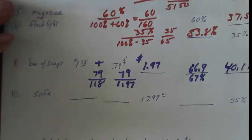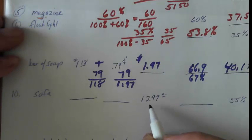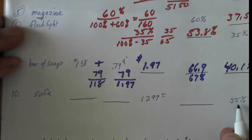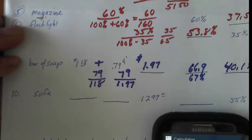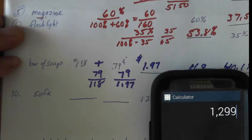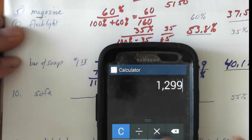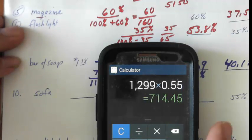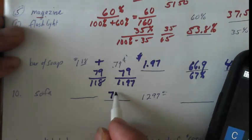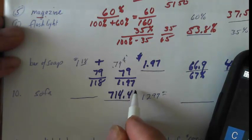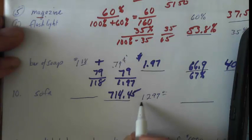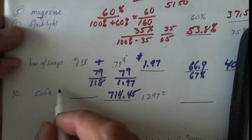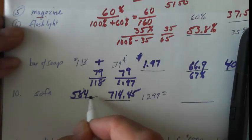Problem 10 is a sofa. They give us the selling price and the markup based on selling price, and we have to find the other values. To get the markup amount, we convert the percentage to a decimal: 1299 times 55% gives a markup of $714.45. To get the cost, we subtract the markup from the selling price, giving us $584.55.